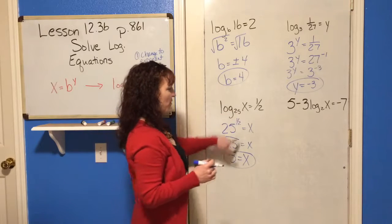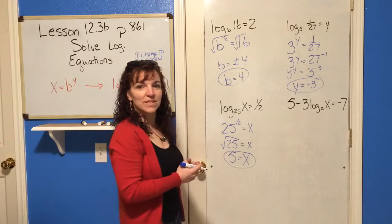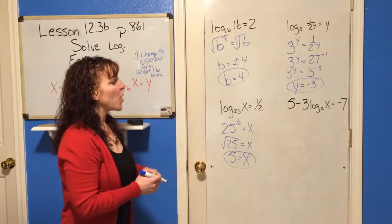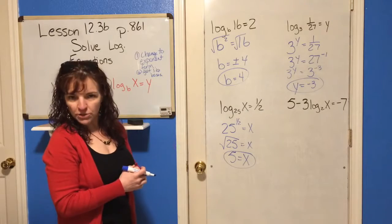So, log base 25 of 5 equals 1 half. So, that's where your x is. Last one. One more, but it's a little bit more involved.